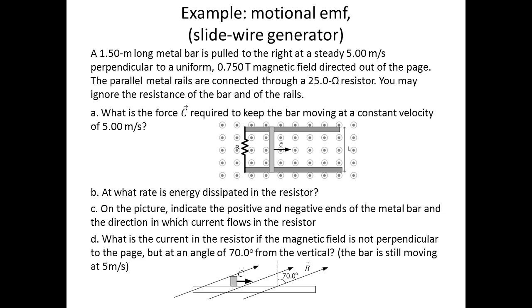The parallel metal rails are connected through a 25 ohm resistor. You may ignore the resistance of the bar and of the rails. What is the force required to keep the bar moving at a constant velocity of 5 meters per second? At what rate is energy dissipated in the resistor?